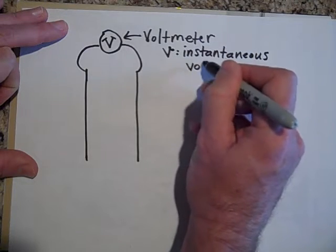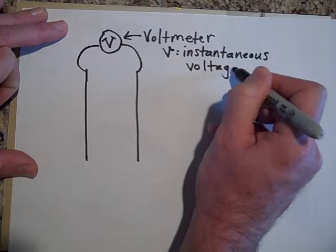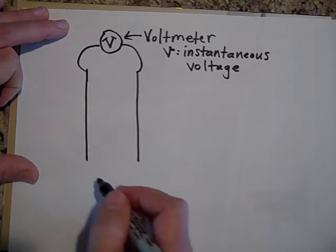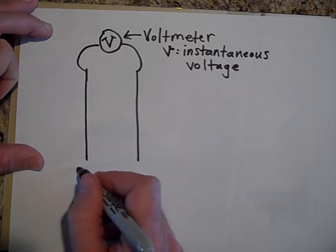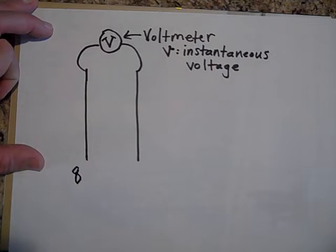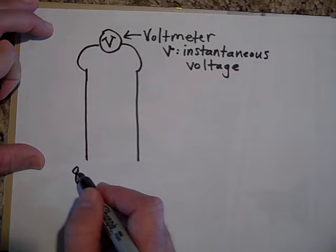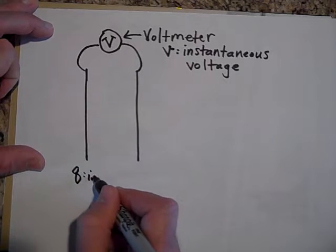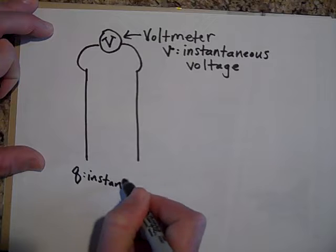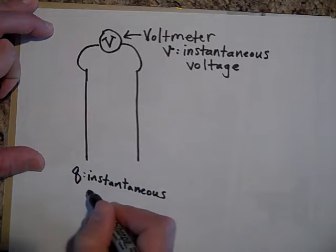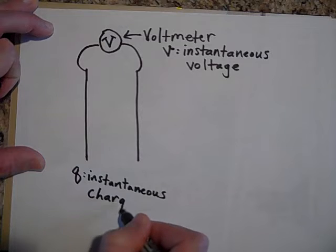Instantaneous voltage, and the charge that's on any one plate once we start to charge it, that's going to be a lowercase q because I want that to be changing too. So that's going to be a variable. This is the instantaneous charge at any given time.